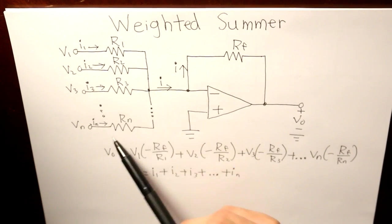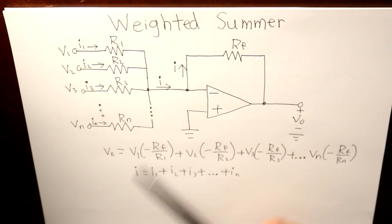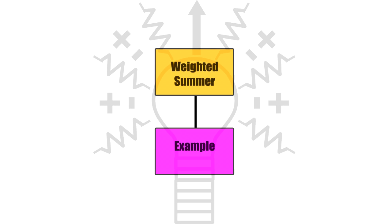So yeah, we have all these input currents going into this node and then going out of this node, and this is a pretty important thing for weighted summers. Now click on the example box.